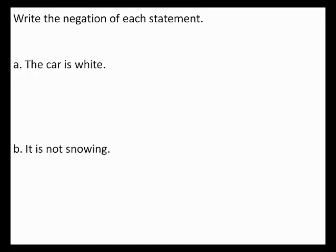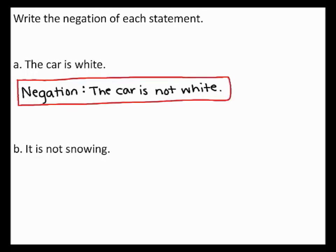Write the negation of each statement. A: the car is white. B: it is not snowing. The negation of a statement is the opposite of the original statement. In part A, the opposite of the statement the car is white is the car is not white. Therefore, the negation of this statement is the car is not white.